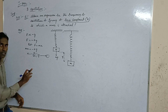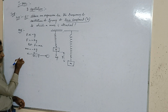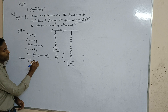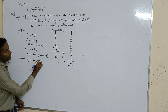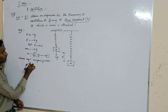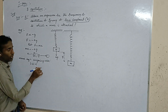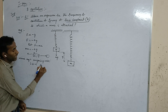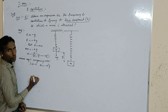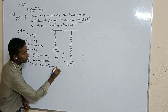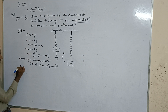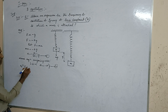Now, comparing the above equation with the standard simple harmonic motion equation — which is: a equals minus omega squared times y — this is Equation 2. Equating Equation 1 and Equation 2: minus omega squared y equals minus k over m times y.